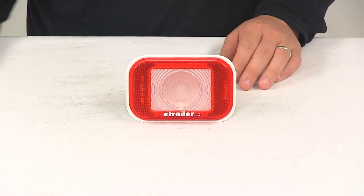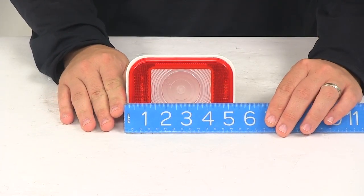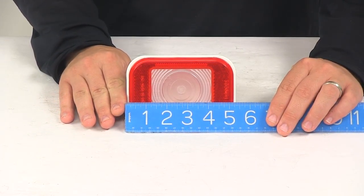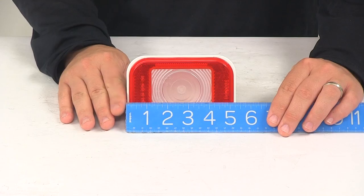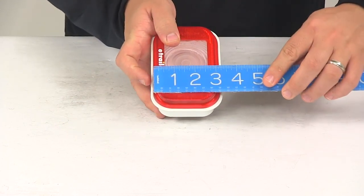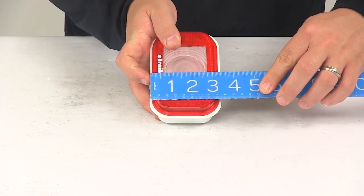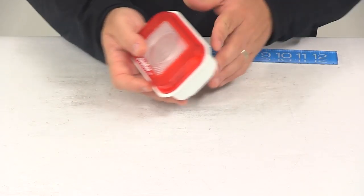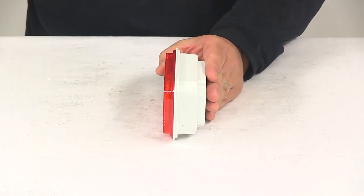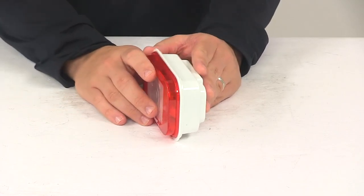Taking a look at the overall dimensions of the light itself, measuring edge-to-edge this direction, it's going to give us a measurement of about 5 and 5 1⁄16 inch long. Going this direction, it's going to measure about 3 and 7 1⁄16 inch tall. And the overall depth from very front to very back measures about 1 and 15/16 inch deep.